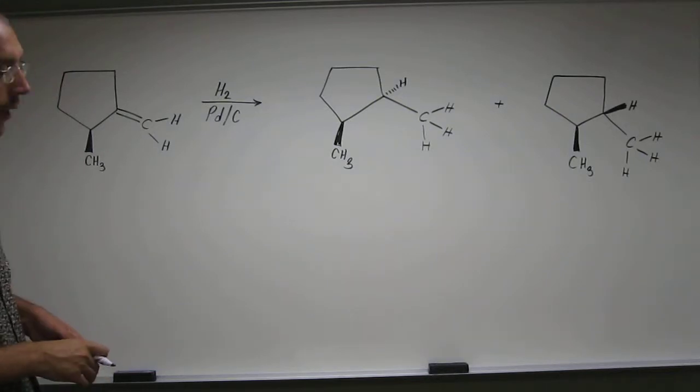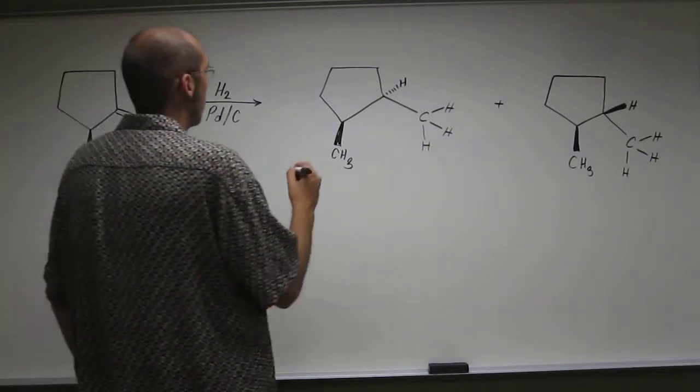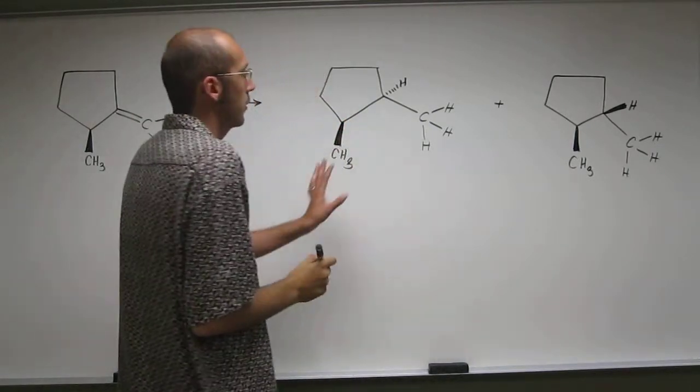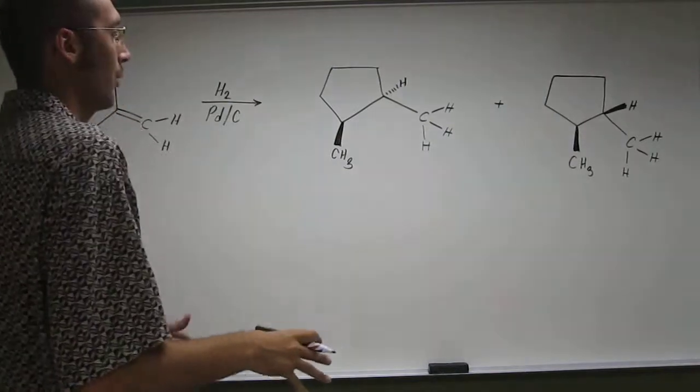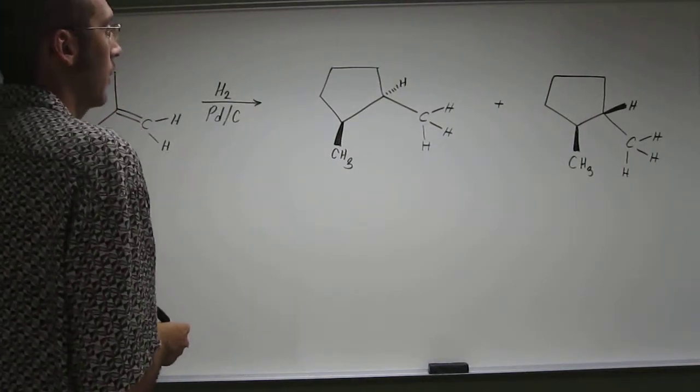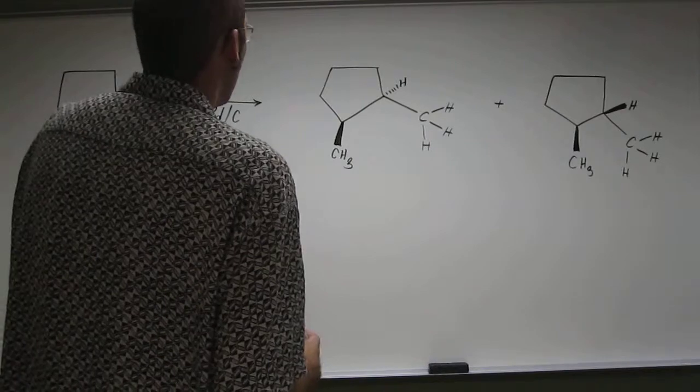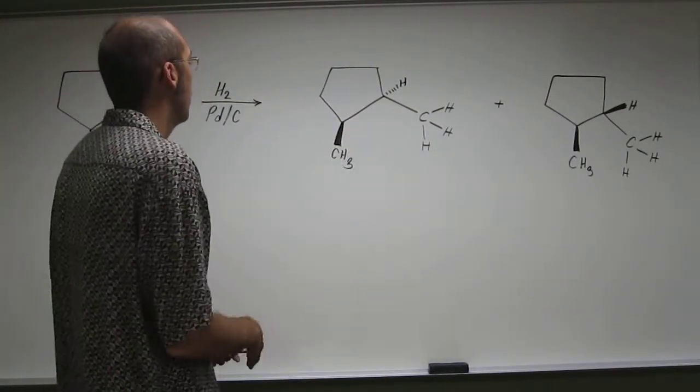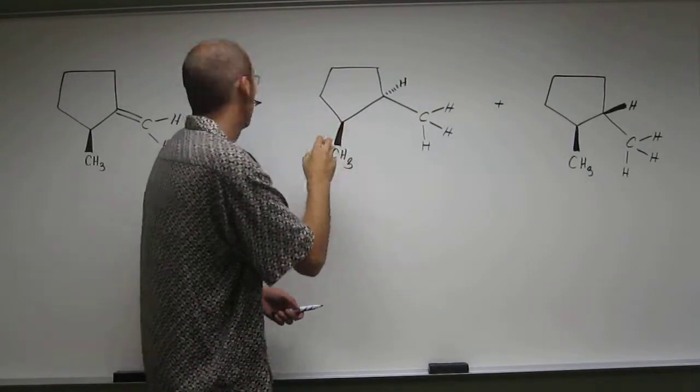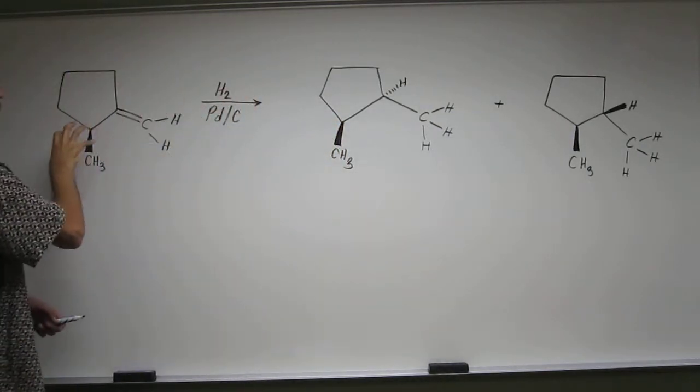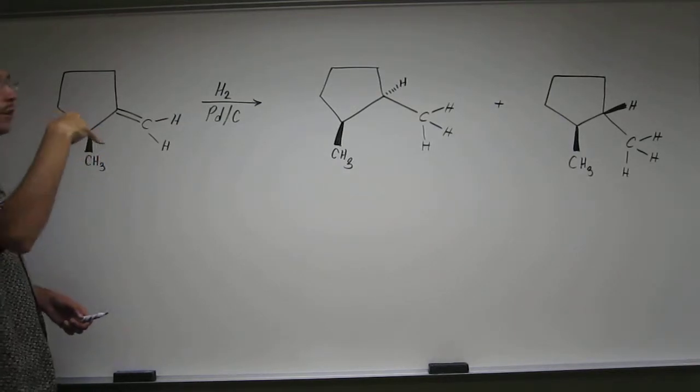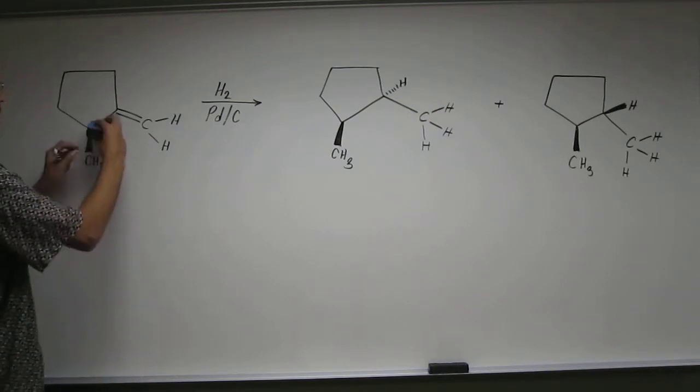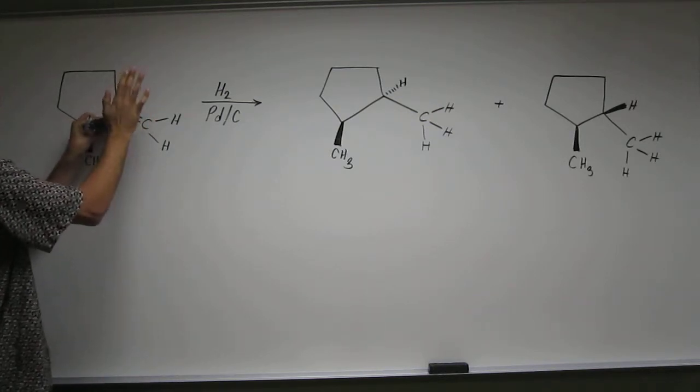And then it asks, well, what's the major product of this reaction? So which of these two products is going to form in the greater amount, or have the greater yield after the reaction is over? Well, remember steric hindrance. Two things can't occupy the same place at the same time. So since this methyl group is pointing up, well, let's look on here. Since this methyl group is pointing up, it would be harder to react from this side. Why?